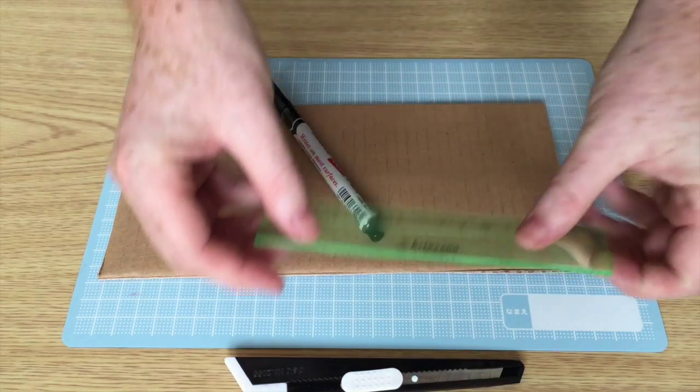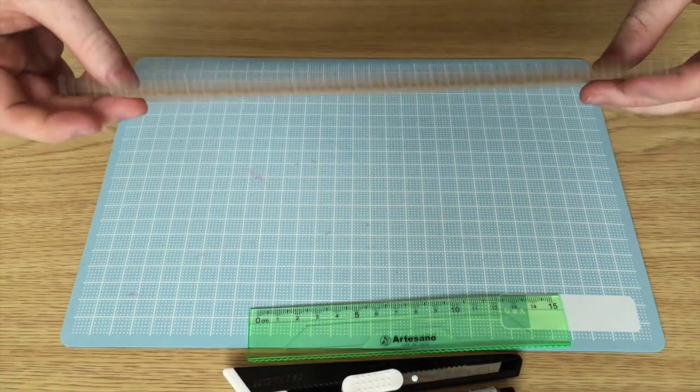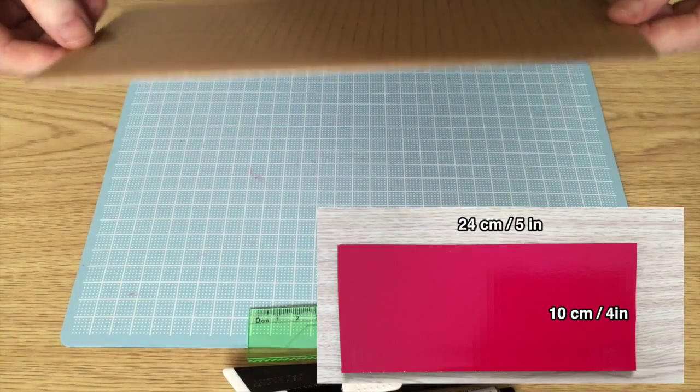You need an X-Acto knife, maybe a ruler, and a marker, and just some plain ripped cardboard. I got this from a paper box, you can get it from anywhere.